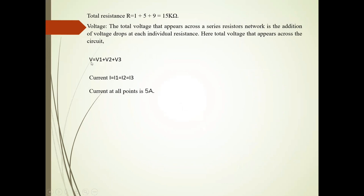Now voltage. Voltage is given by V is equal to V1 plus V2 plus V3 and current is I, I1 equal to I2 equal to I3. And current at all points is 5 ampere.